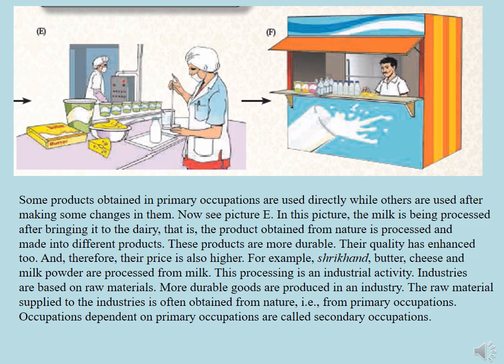And therefore their price is also higher. For example, shrikhand, butter, cheese, and milk products are processed from milk. This processing is an industrial activity. Industries are based on raw materials, and more durable goods are produced in an industry. The raw material supplied to industries is often obtained from nature, from primary occupations. Occupations dependent on primary occupations are called secondary occupations.